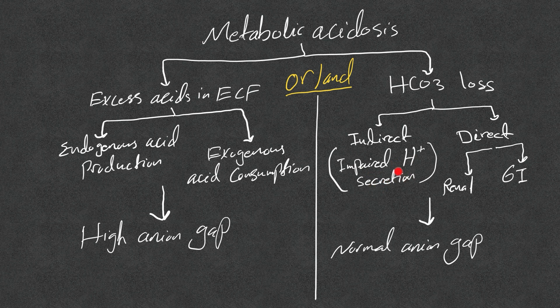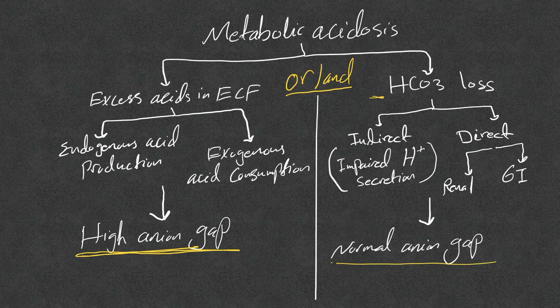Indirect means there is impaired proton secretion in the kidney, which indirectly leads to bicarb loss. Very importantly, excess acid in the ECF leads to high anion gap metabolic acidosis, while bicarb loss leads to normal anion gap metabolic acidosis. If you remember that, you will not need to memorize the differential for high anion gap and normal anion gap metabolic acidosis.